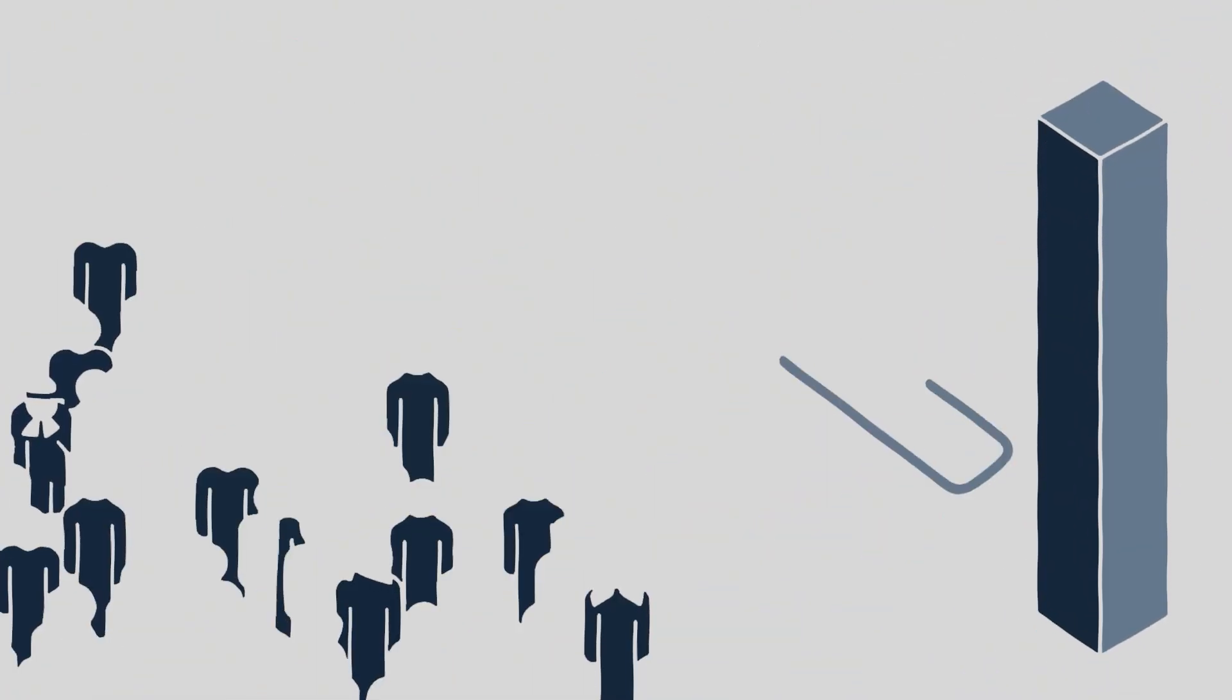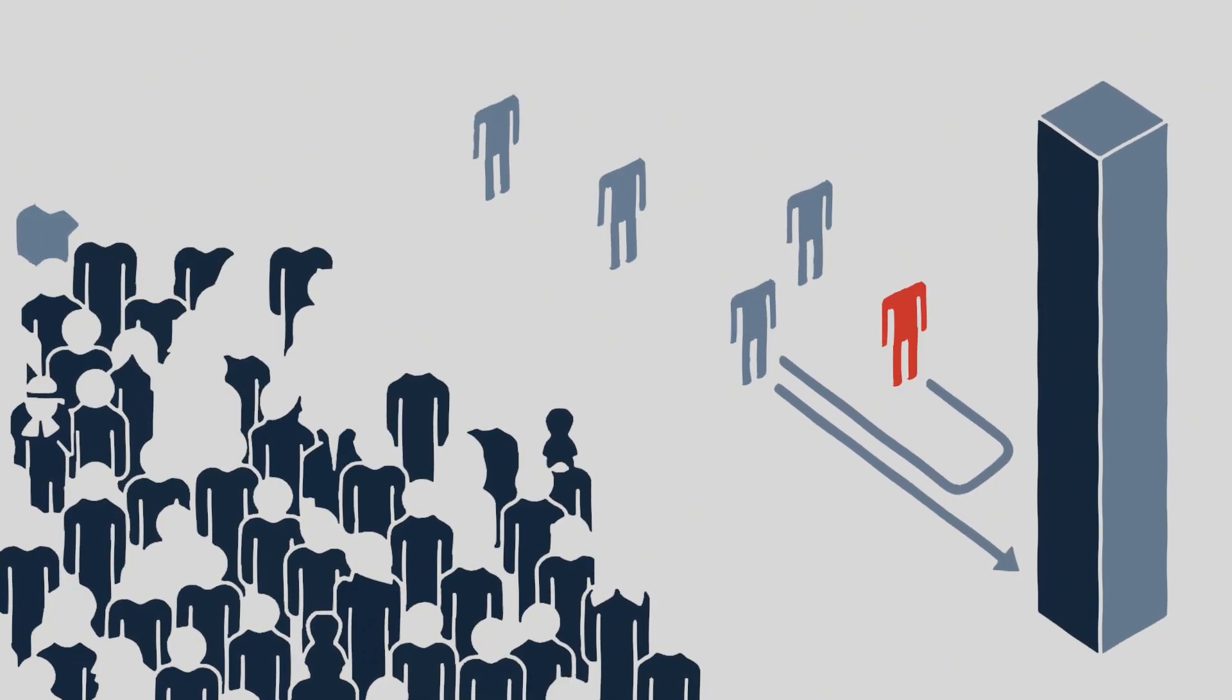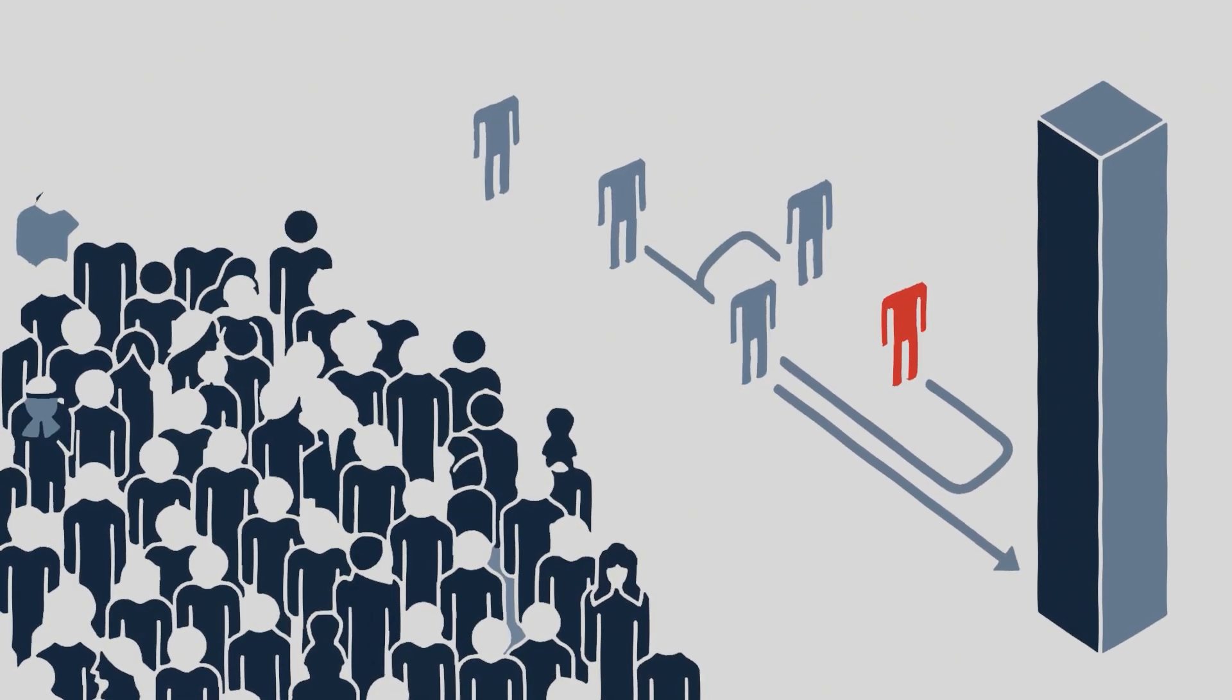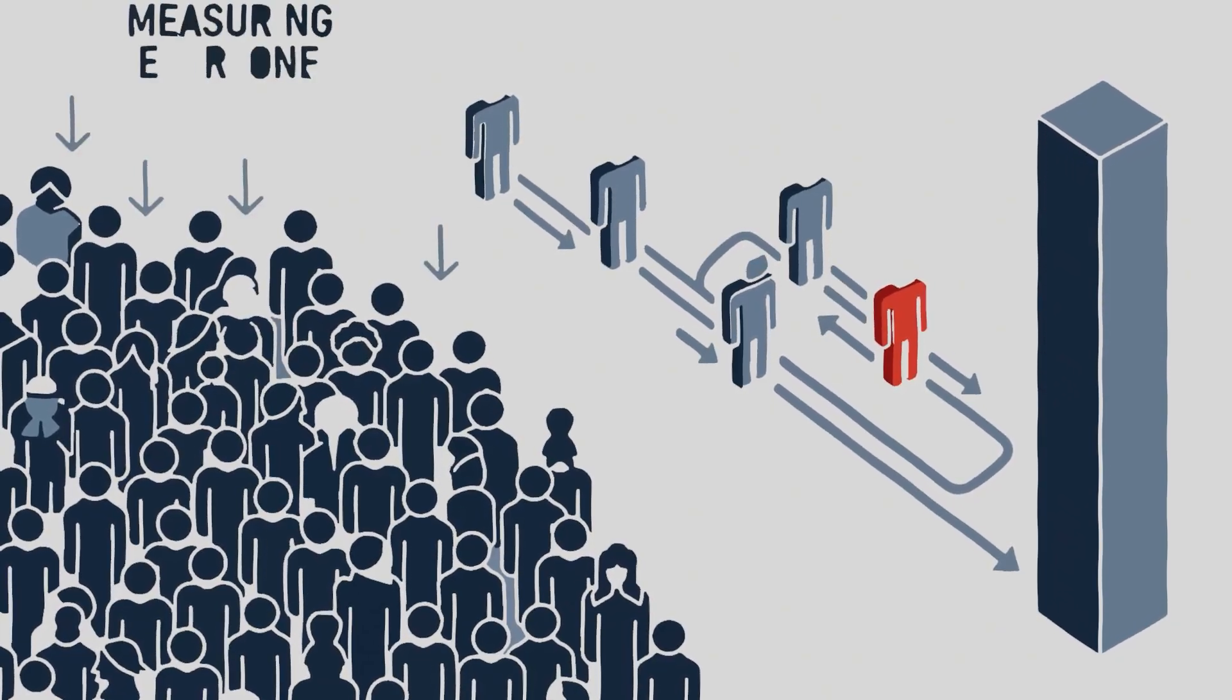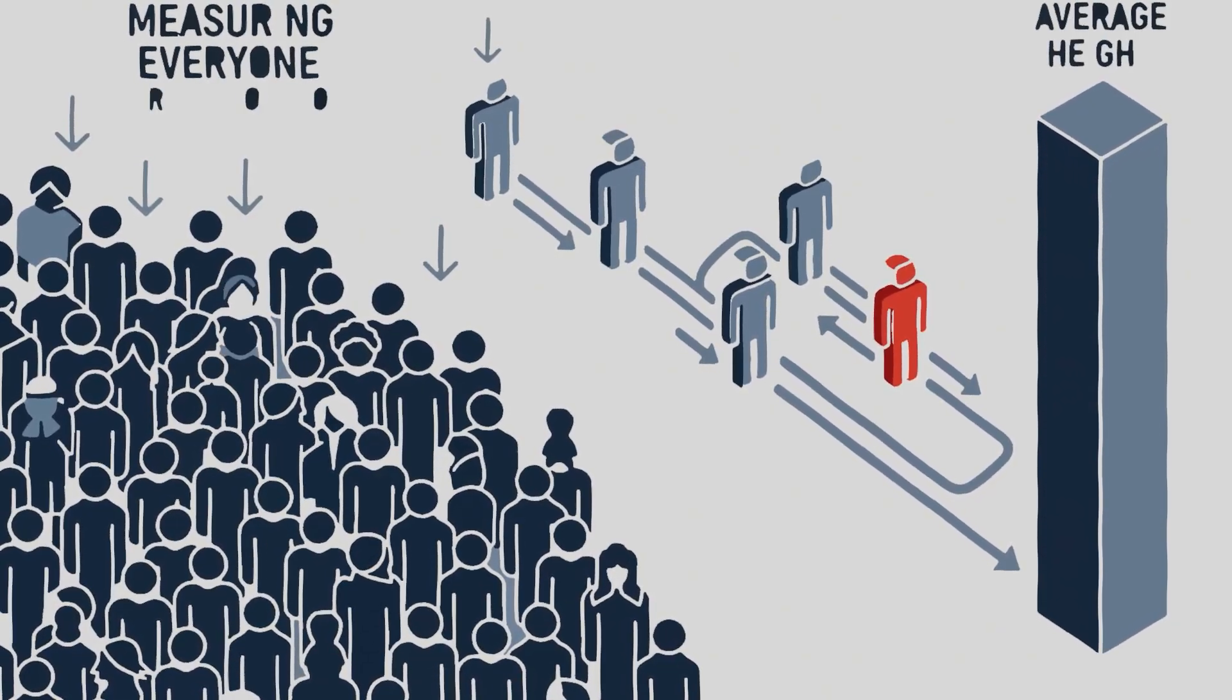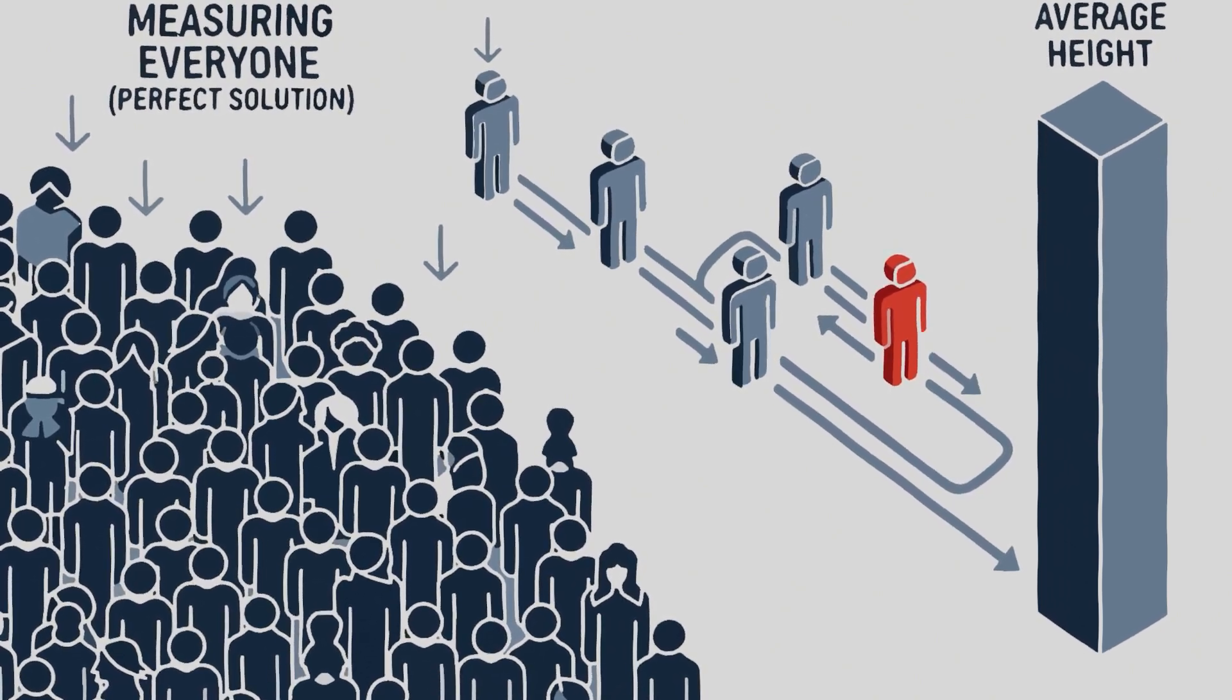Here's a simple way to think about it. Imagine you want to know the average height of everyone in your country. You could try to measure every single person. That's the perfect solution. Or, you could go outside, randomly measure a few hundred people, and average their heights. That average won't be perfect, but it will be close.